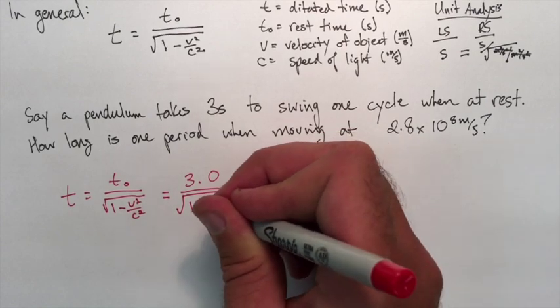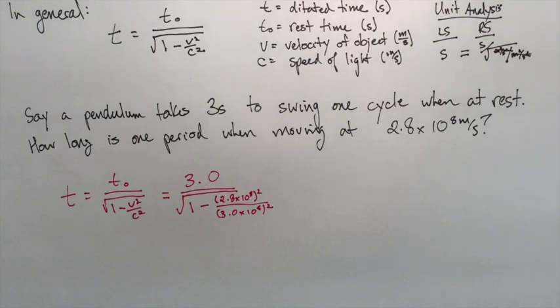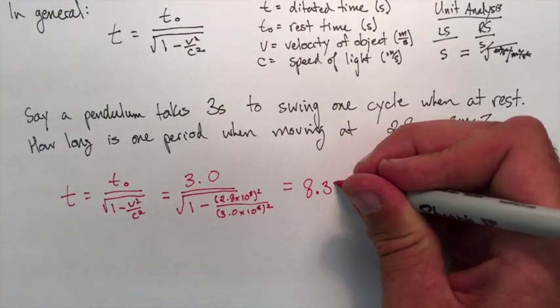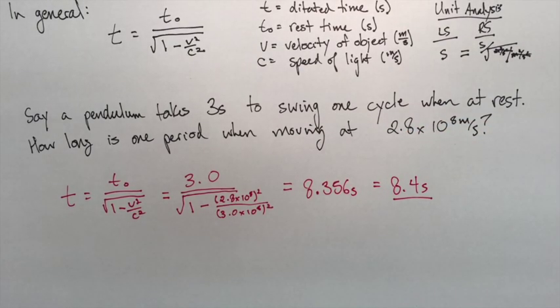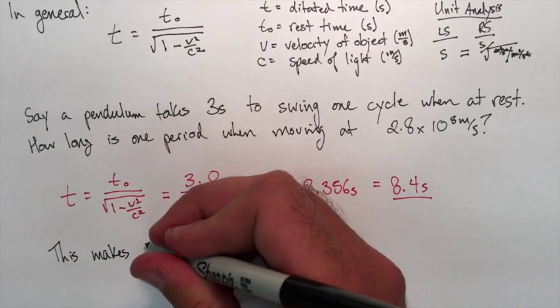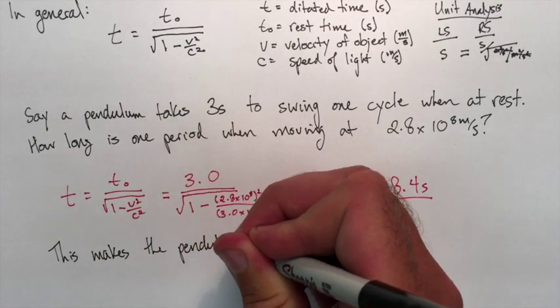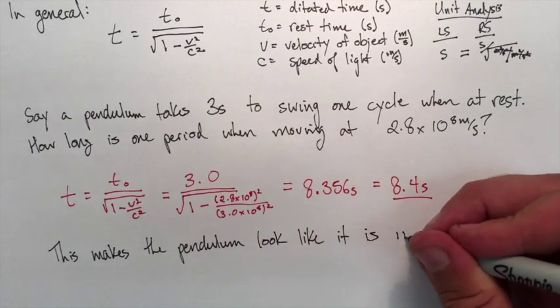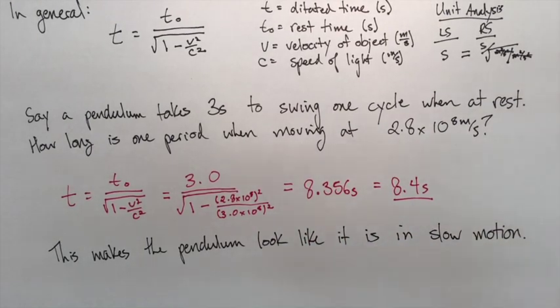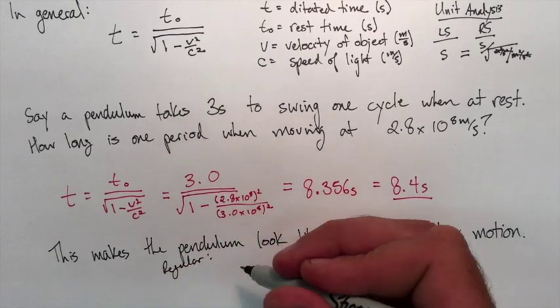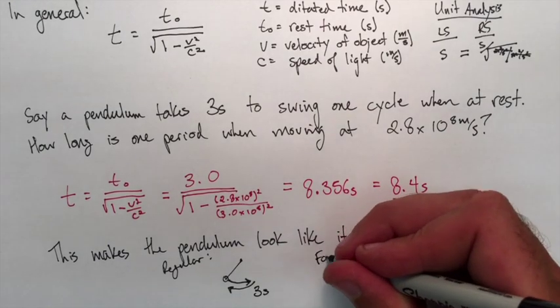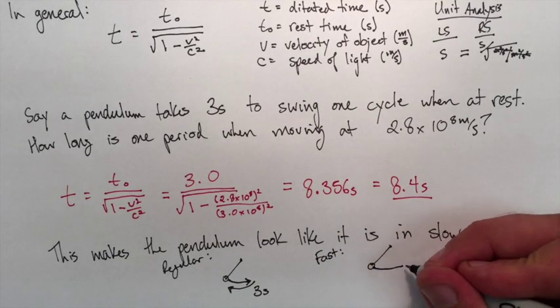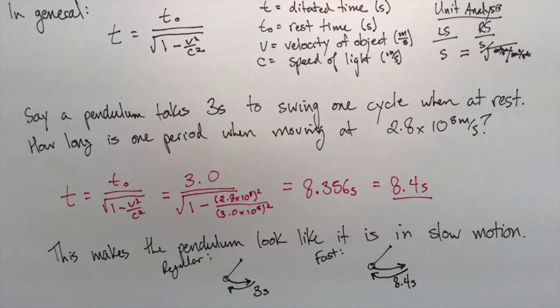So let's use the formula here. So 3.0—remember—is our rest time. Here we put in the velocity of the spaceship, and now we just make a calculation. We find that when we look at it going past the window, it's now going to take about 8.4 seconds to do the same thing. So it's going to take a longer time to do the same thing, so it's actually going to make the pendulum look like it's going in slow motion on this spaceship. So the spaceship is going pretty fast past the window, but the pendulum on the spaceship is going to look like it's going slow. So normally three seconds for back and forth, but now it's telling us 8.4 seconds to go back and forth.